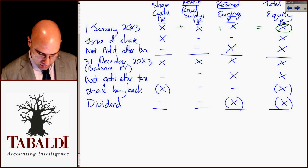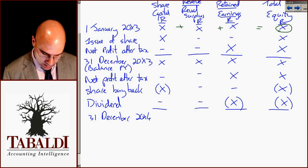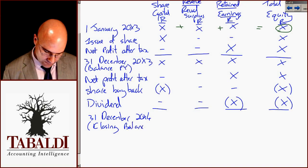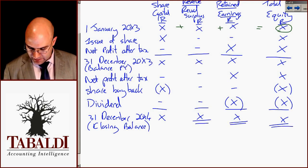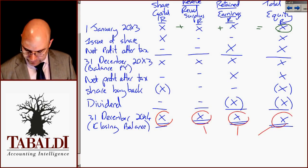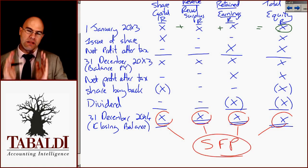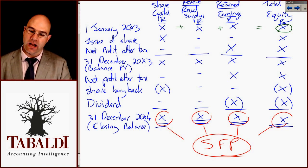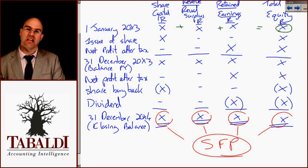We will then have a closing balance at 31st of December 20x4. Add those columns up, do your total by doing two lines underneath. All of these figures will go to the statement of financial position. This is the third of the statements that IAS 1 prescribed — so we've got statement of financial position, statement of profit or loss and other comprehensive income, as well as the statement of changes in equity.